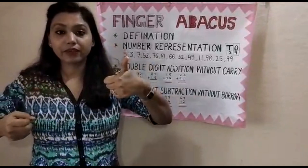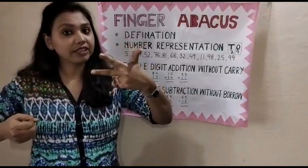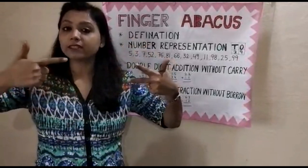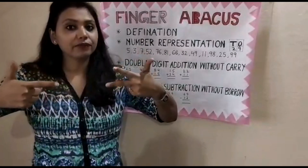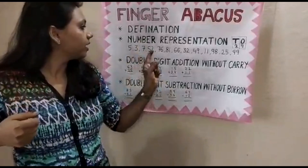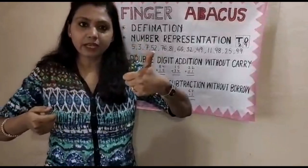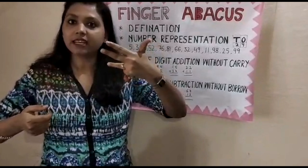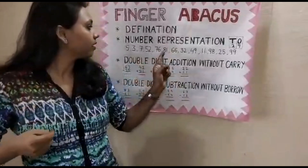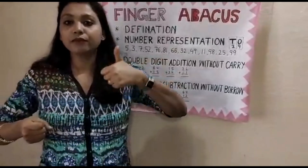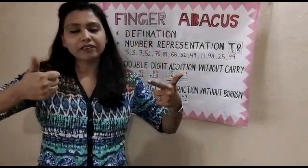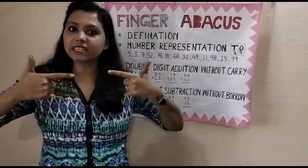For 76: left hand shows 50 plus 10 plus 10, that's 70. Right hand shows 5 plus 1, that's 6. So that's 76. For 81: left hand shows 50 plus 10 plus 10 plus 10, that's 80, and right hand shows 1 — that's 81. For 66: left hand shows 50 plus 10, that's 60, and right hand shows 5 plus 1, that's 6 — so 66.